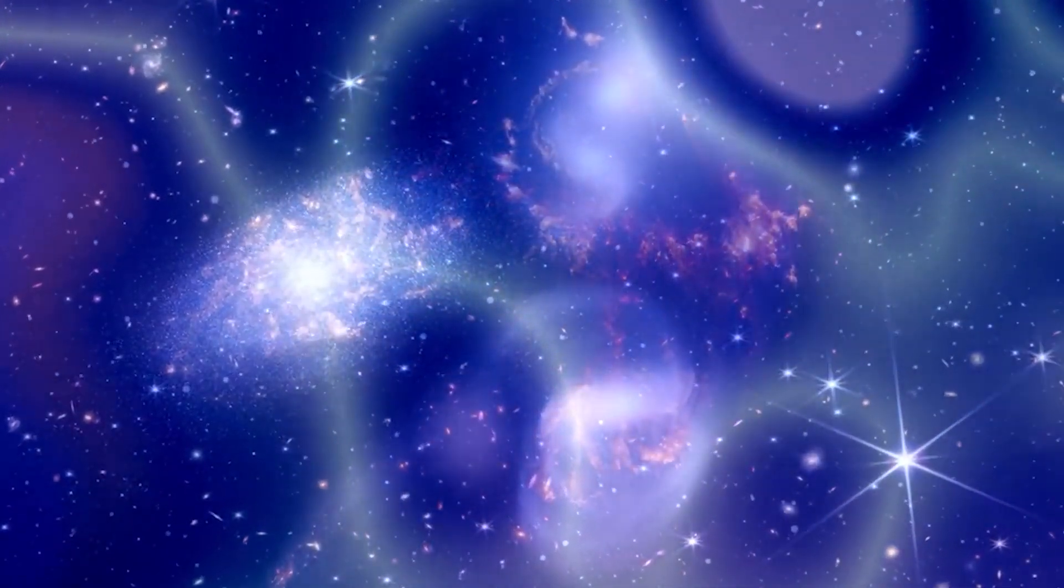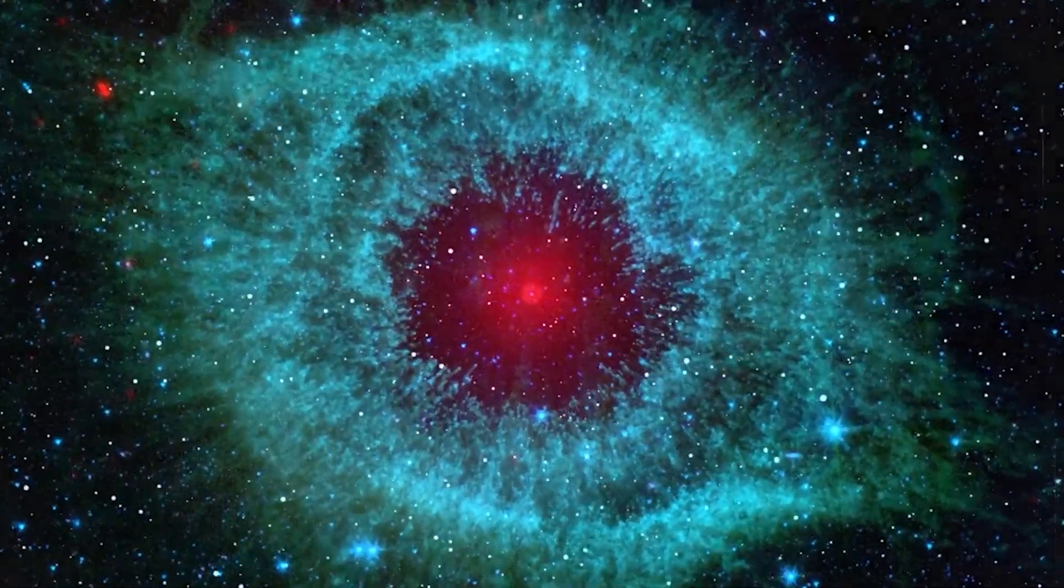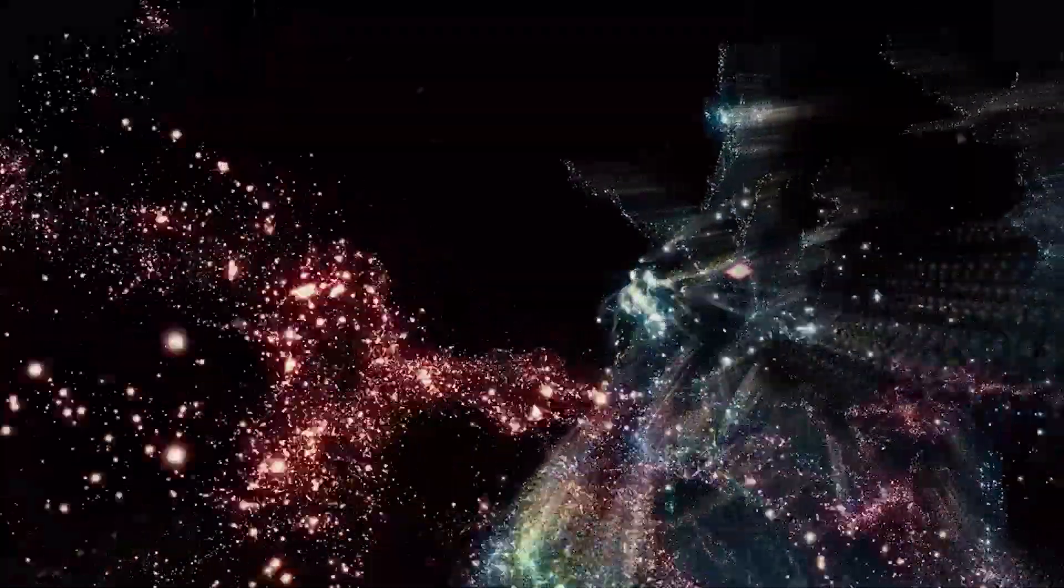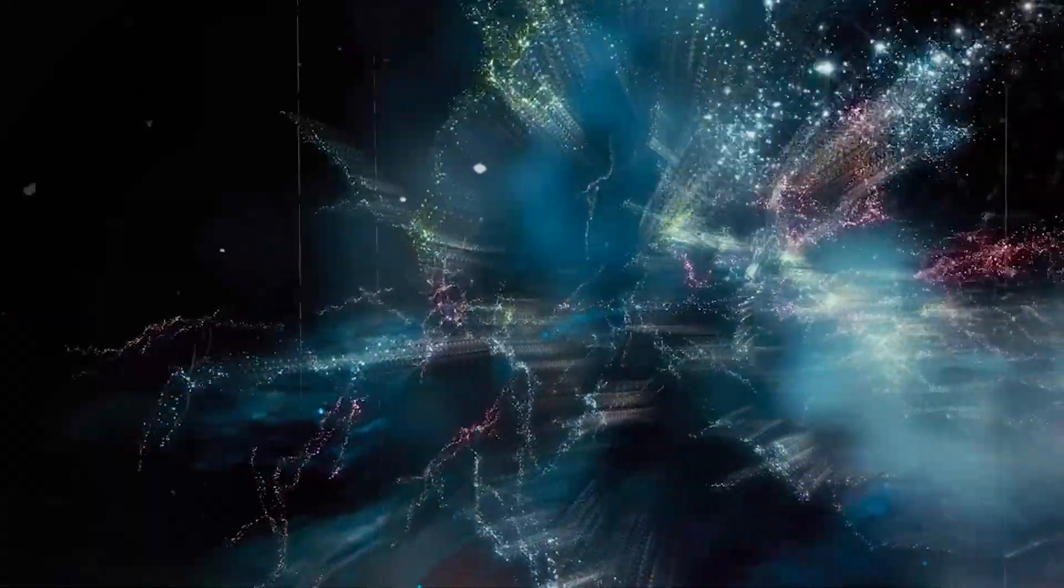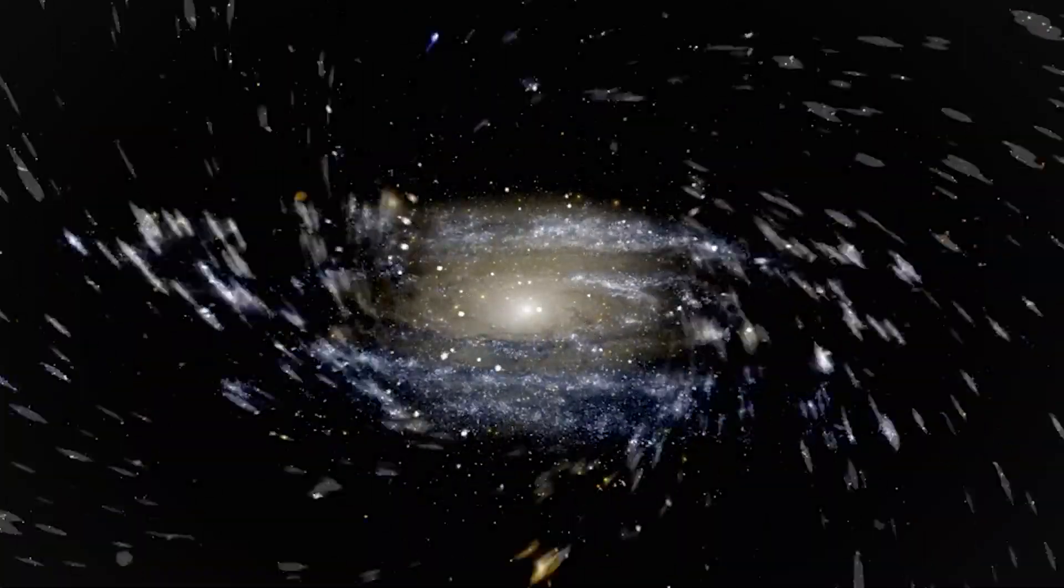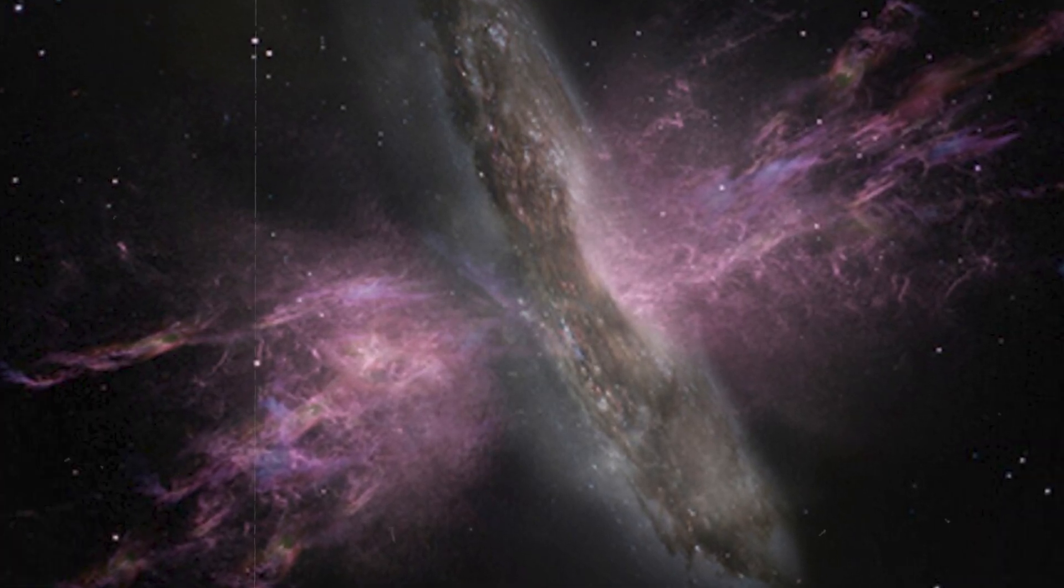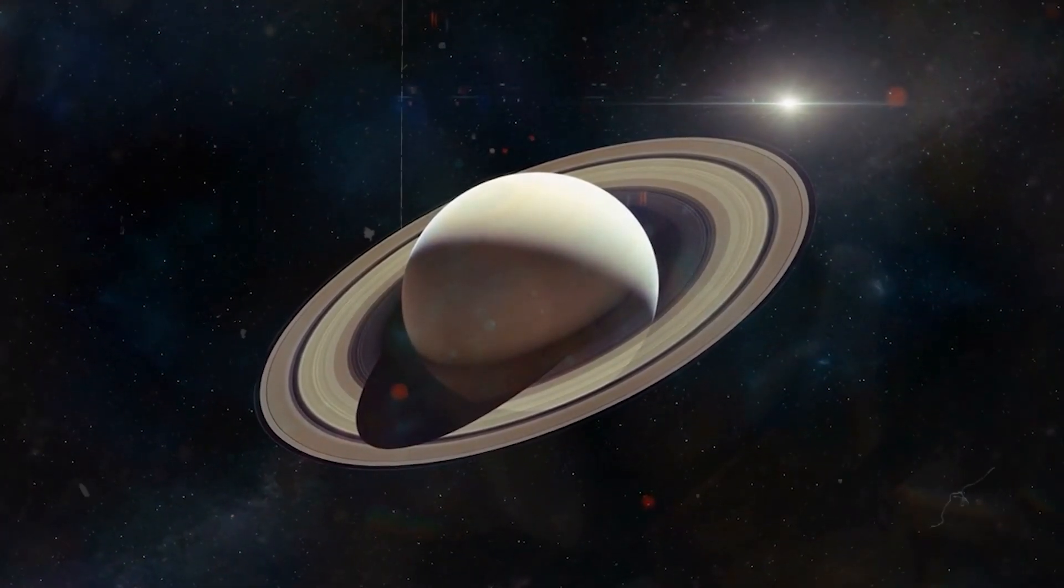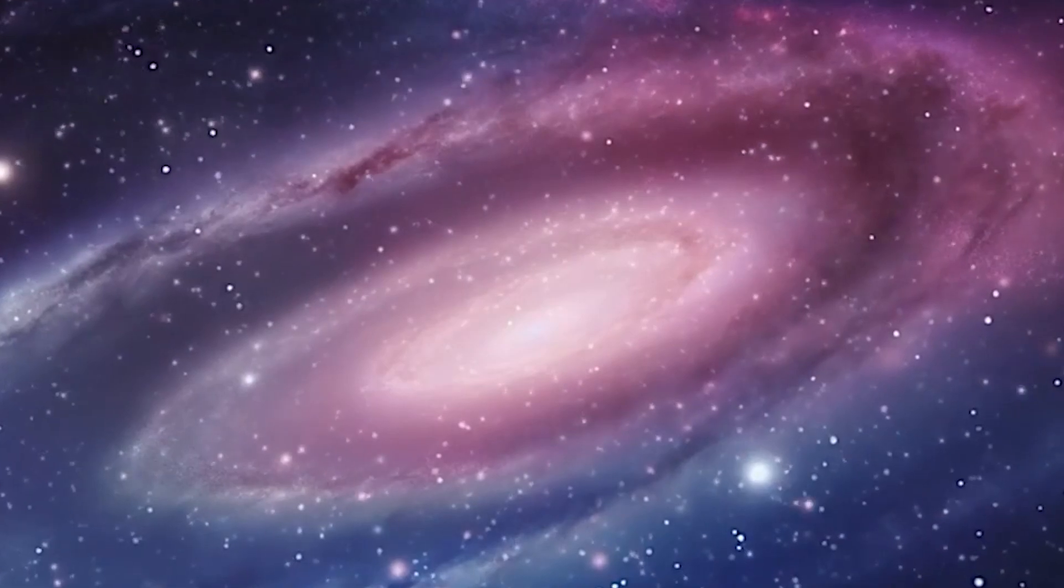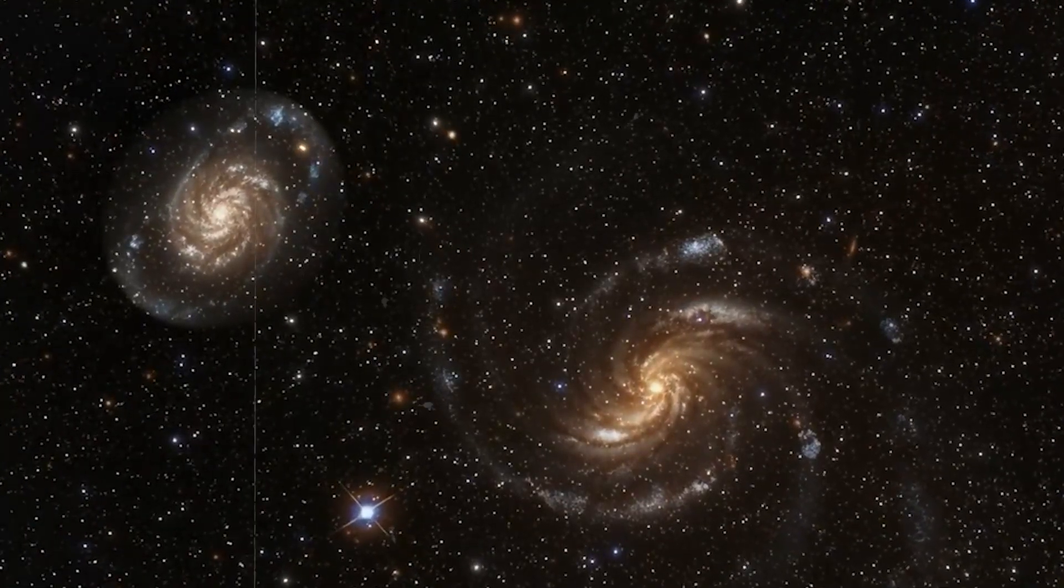The very existence of such a gargantuan, organized structure throws shade on the cosmological principle. This fundamental tenet posits that the universe, on a large enough scale, is uniform. Matter and galaxies, it suggests, should be more or less evenly distributed, with no massive clumps or glaring inhomogeneities. Yet, the Giant Ring stands as a defiant middle finger to this principle, its sheer size and intricate organization screaming incoherence. But the strangeness doesn't stop there. The ring's shape throws another curveball into the mix. It's not a simple, flat ring like Saturn's, but rather a corkscrew-like behemoth, with galaxies lining its elongated spiral.